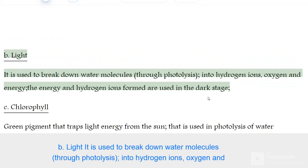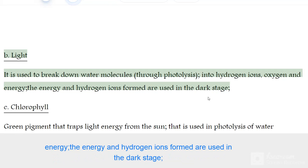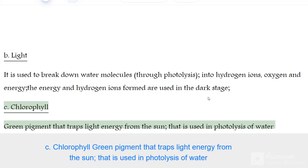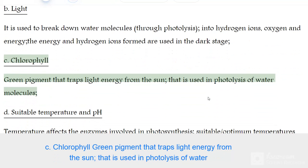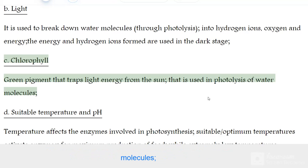Light is used to break down water molecules through photolysis into hydrogen ions, oxygen, and energy. The energy and hydrogen ions formed are then used in the dark stage. Chlorophyll is a green pigment that traps light energy from the sun, which is used in the photolysis of water molecules.